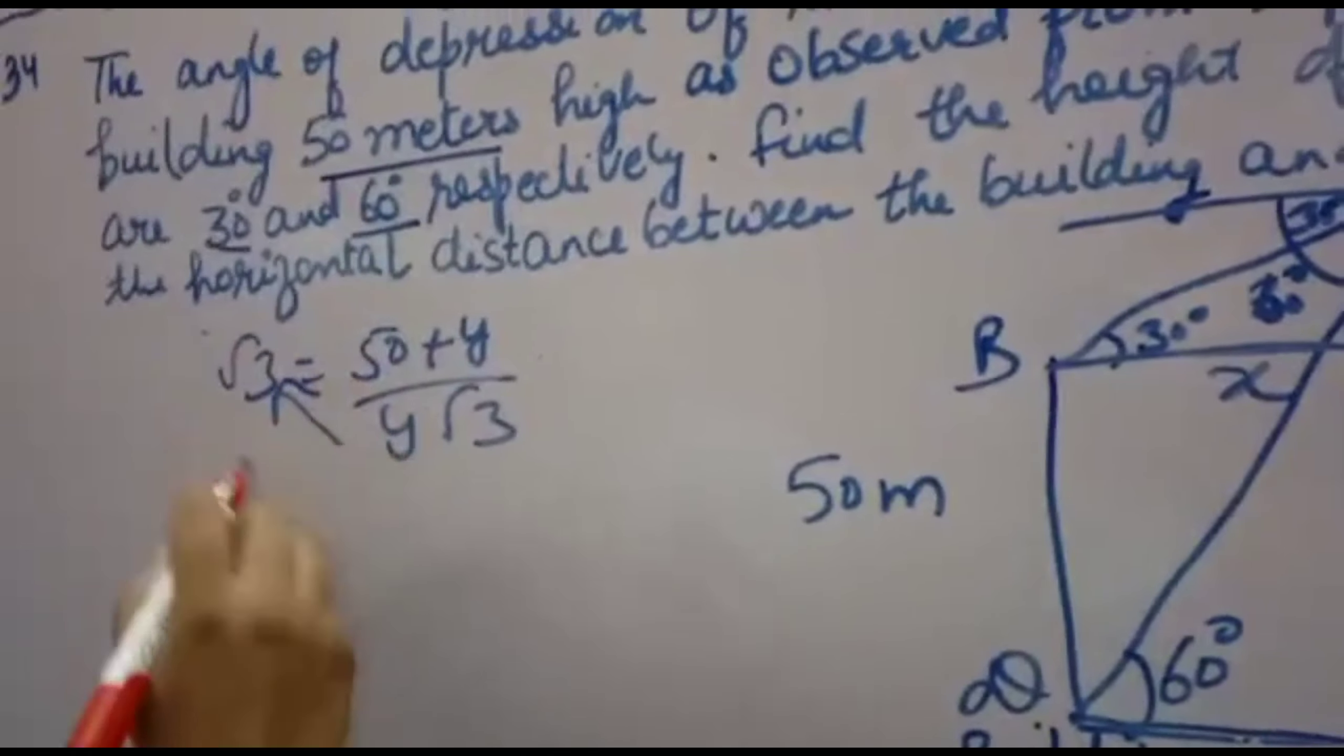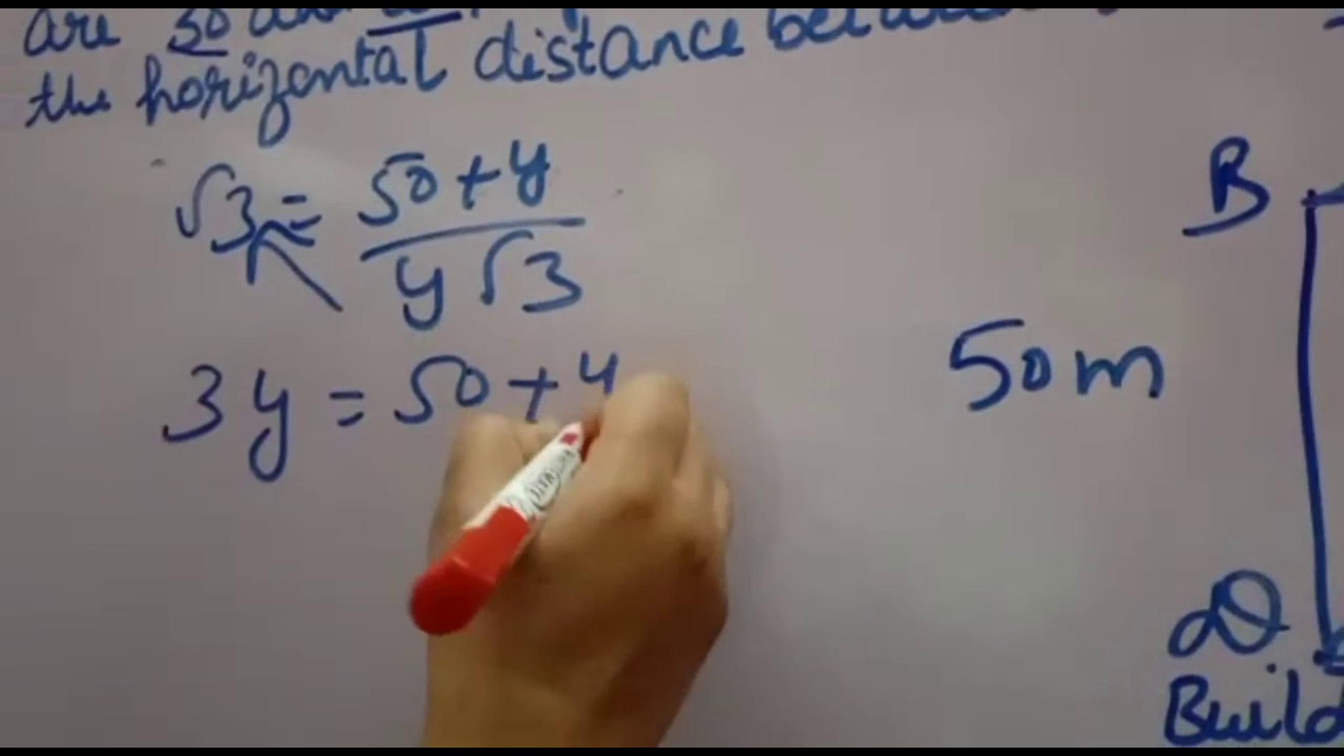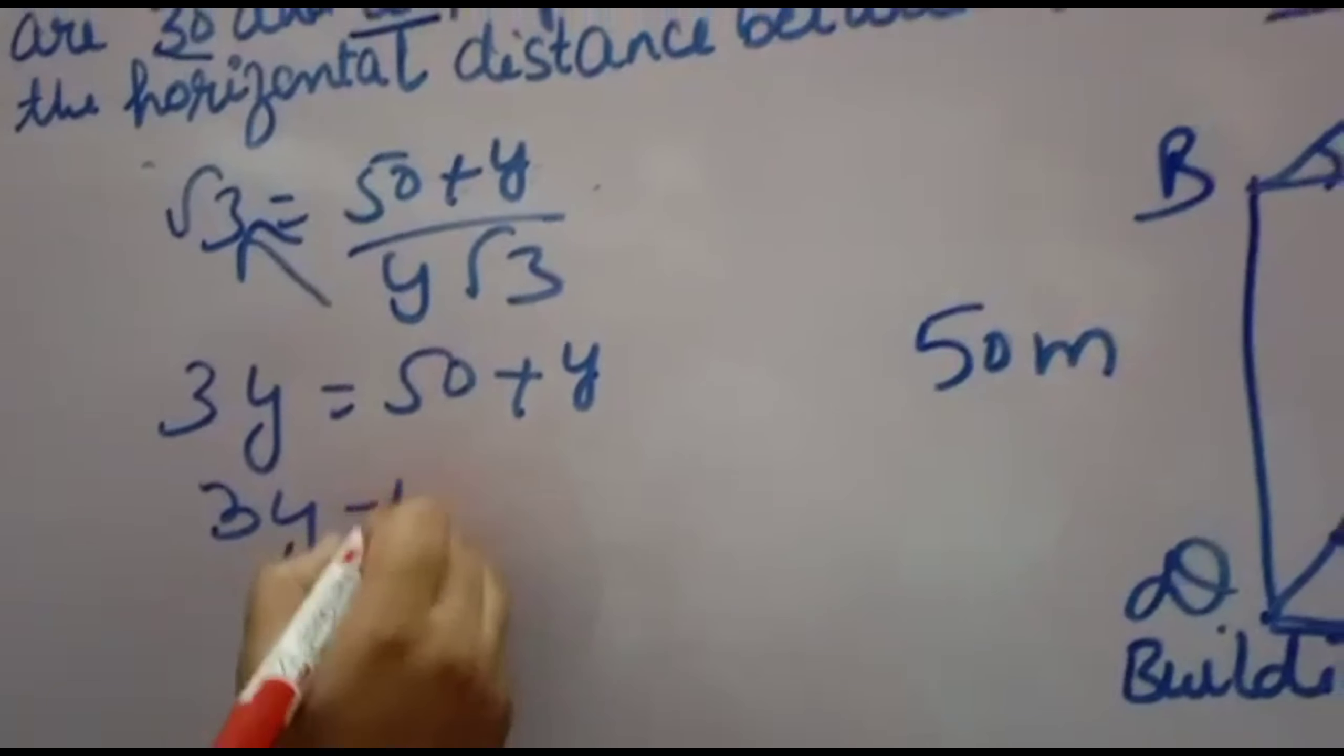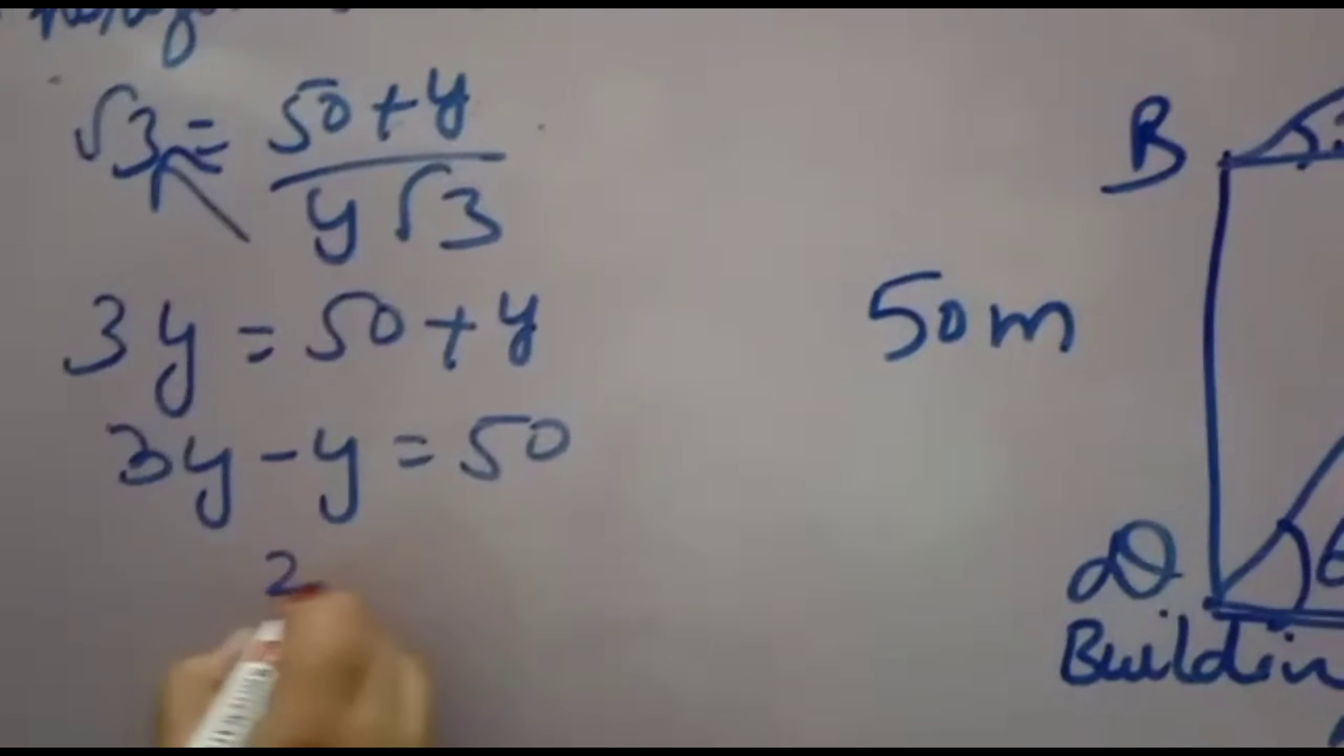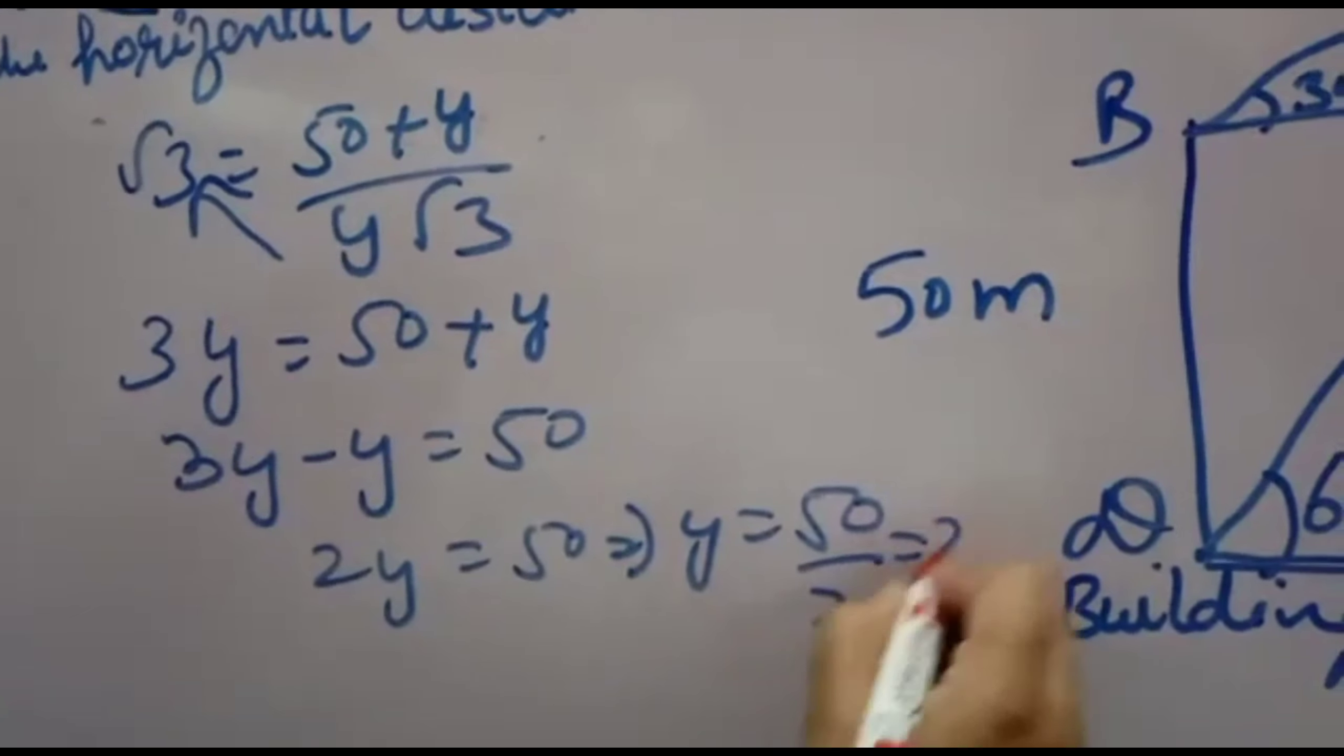Now cross multiply. y root 3 into root 3. You will get 3y equal to 50 plus y. y by y you will take one side. 3y minus y is equal to 50. 2y will come equal to 50. So y will come 50 over 2. That is 25.